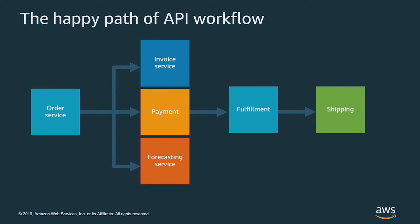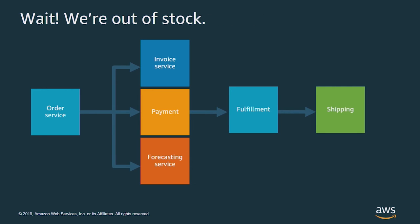Here's a simple e-commerce application. In the happy path, everything works as expected. The order service triggers invoicing and payment systems and then updates the forecasting service. Once the payment clears, this triggers the fulfillment and packing of the order. Finally, fulfillment informs the shipping service to request tracking information. But what happens if the fulfillment center cannot find the product because they're out of stock?